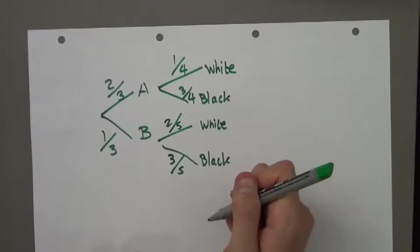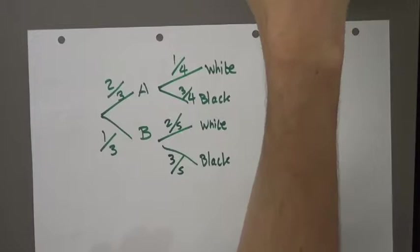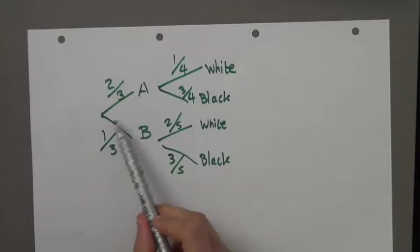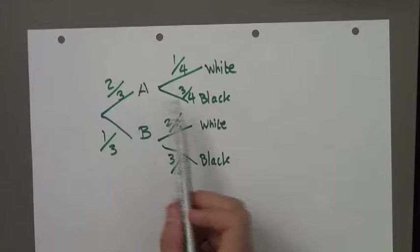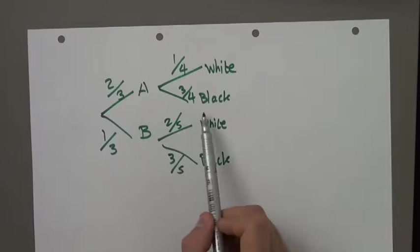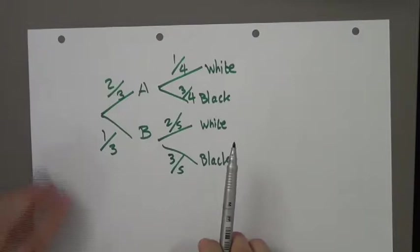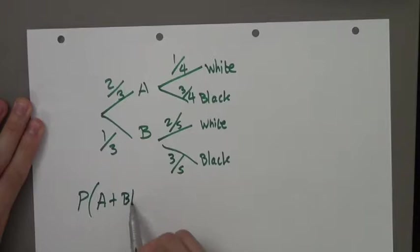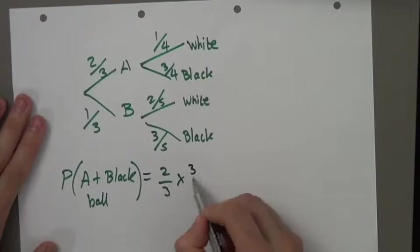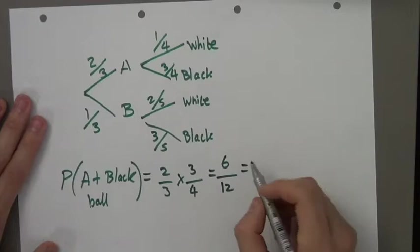Find the probability that Abdul chooses box A and a black ball. This is where we need to combine probabilities — this is the extension from chapter 8 basic probability to chapter 24. The probability of picking box A is 2/3, and once picked, the probability of a black ball is 3/4. To find the combined probability, we multiply: 2/3 times 3/4 is 6/12, which is 3/6, which is 1/2.